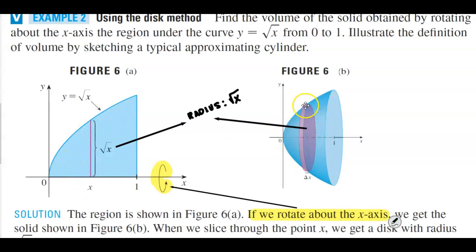That disk has a radius of that particular circle that goes from here to here, which is the square root of x. So that's how we determine that the radius is √x.